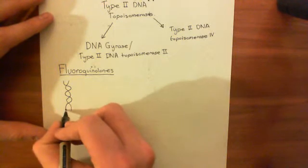Here's the DNA here. And this thing coming along here is either the DNA gyrase enzyme, type 2 DNA topoisomerase 2, or it could be type 2 DNA topoisomerase 4. And this enzyme, whichever of those two it is, is going to come to our positively supercoiled DNA, and it's going to cut. It's going to produce a double-strand cut of the DNA.